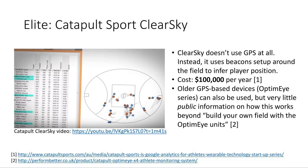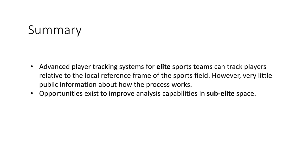That said, it comes with a hefty price tag — it can cost professional teams up to $100,000 per year. Looking through the marketing materials, I did find that their system also works with the older GPS devices they used to manufacture, and it claims that using those GPS devices you can build your own field. My guess is that if you were to use one of their GPS devices to measure the goal posts at either end, based on that it could calculate where absolute player positions are relative to the goals. So in summary, these advanced player tracking systems for elite sport teams do have the functionality to track players relative to the local reference frame of the field, at least from what I can tell from their marketing materials.